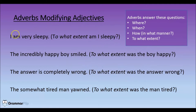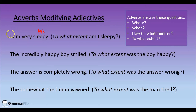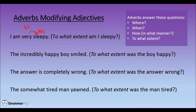In the sentence, 'I am very sleepy,' immediately we see an adjective here — sleepy — which is describing the subject I. If we were to ask the question, to what extent am I sleepy, we would say 'very sleepy.' So 'very' is an adverb modifying the adjective 'sleepy.'